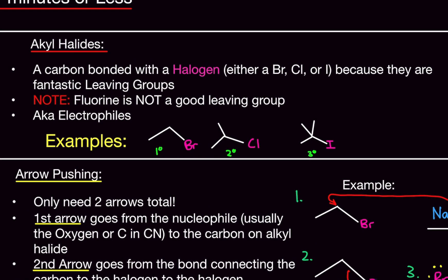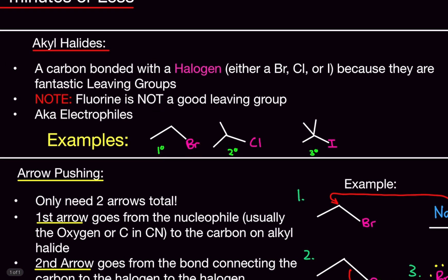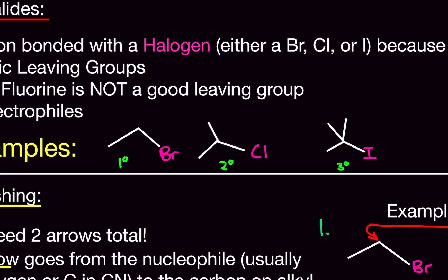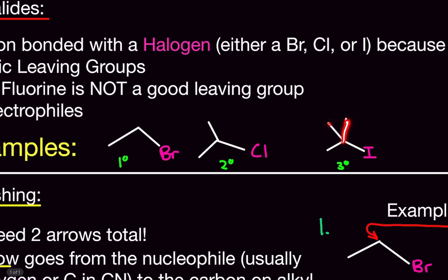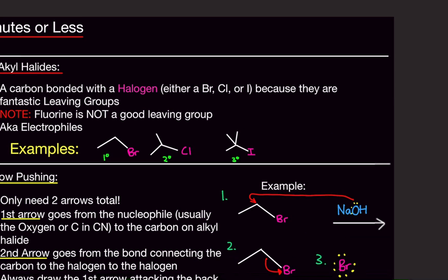Here are some examples here. Here, we have a first-degree alkyl halide, a second-degree, and a third-degree alkyl halide. Now, SN2 reactions only work for first-degree and second-degree alkyl halides, not third-degree. So, what do I mean by first-degree, second-degree, and third-degree? A first-degree alkyl halide just means how many branches are coming off the carbon. So, here, we have one branch coming off the carbon. We do not include the branch or the bond from the carbon to the halogen. That does not count. Here, for second-degree, you have two branches. And third-degree, you have one, two, and three branches here. That's why it's third-degree.